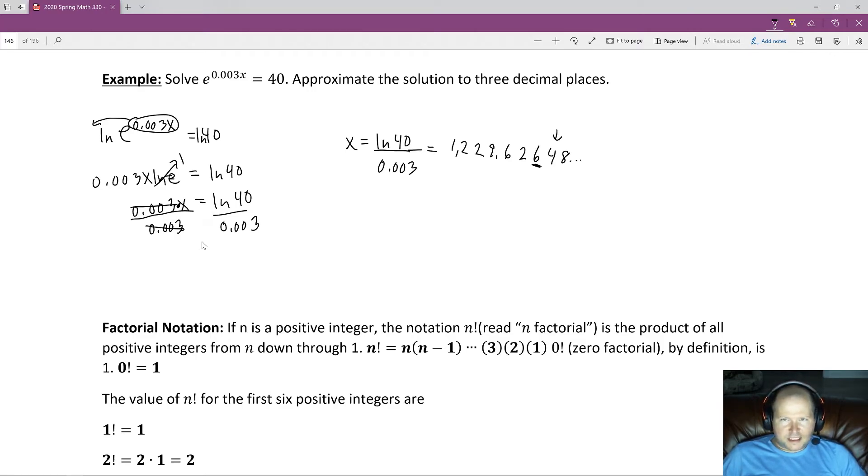Since 4 is 0, 1, 2, 3, 4, we round down. If it was 5, 6, 7, 8, 9, we would round up. So we're going to be rounding down. So this is approximately 1,229.626.